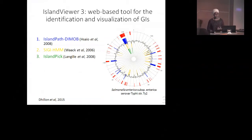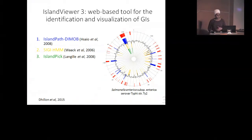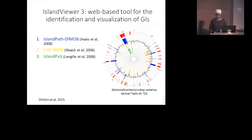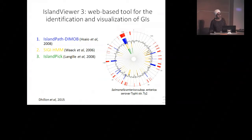Here I've shown an example of what the output from Island Viewer looks like. This is a Salmonella genome — microbial genomes are circular, so the circular plot represents the full genome. The colored bars around the genome represent the genomic island predictions based on the method they were predicted by, and the red bars simply represent the union of the predictions.